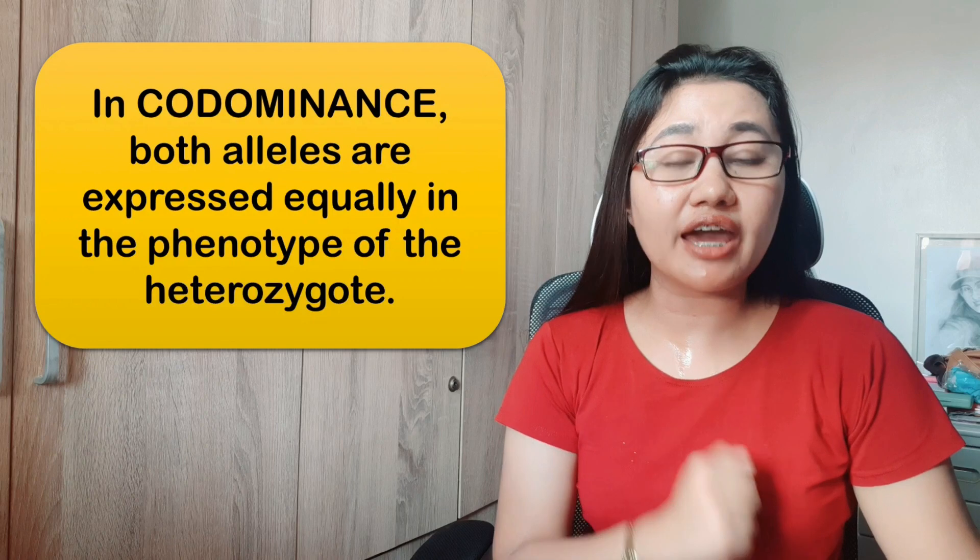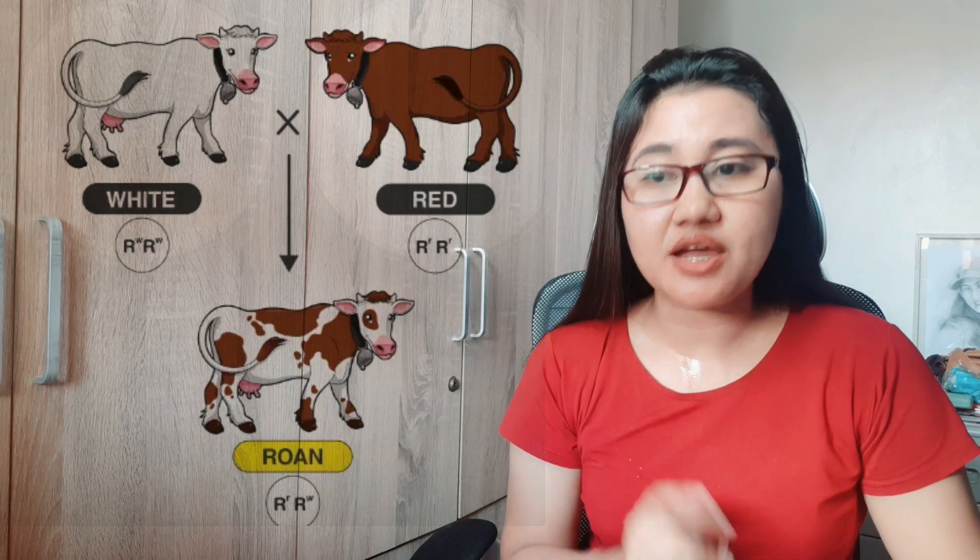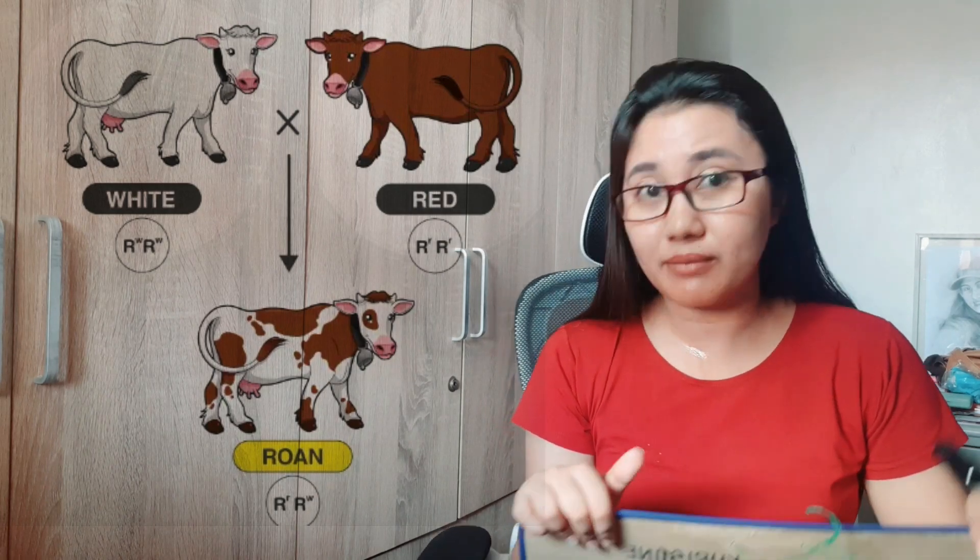So, what is codominance? Both alleles are expressed equally in the phenotype of the heterozygote. For example, red cows crossed with white cows will have offspring that are roan — cows with both red hair and white hair. In codominance, there is no recessive and no dominant — no one wins, no one loses. All traits are visible in the offspring. Both traits of the parents appear in the offspring, unlike incomplete dominance where a new phenotype emerges.